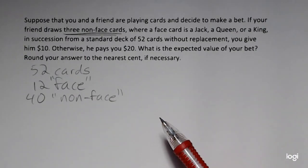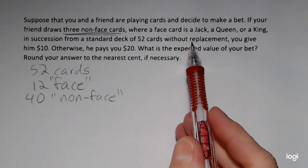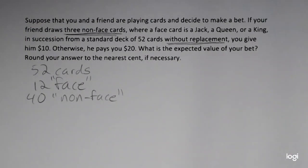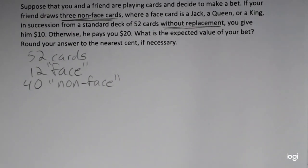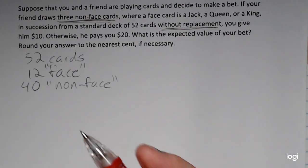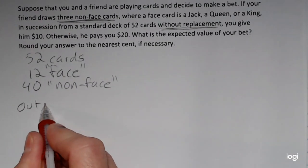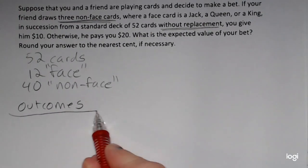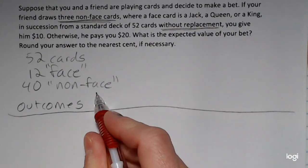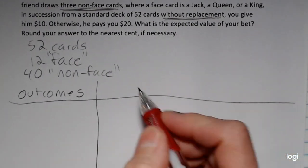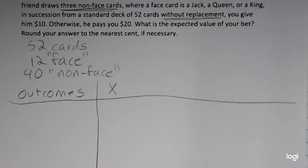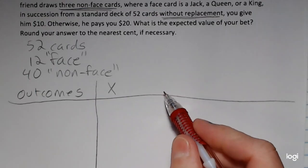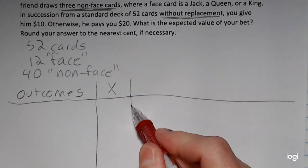We are looking for non-face cards in this problem. And another key point that is important to take a look at is the statement without replacement. So I need to set up my probability table. I have my outcomes, and I want to write my outcomes out in words first. And that will help me translate to an x value because we need a numeric value to plug into the expected value formula.